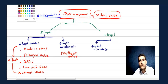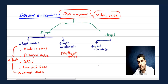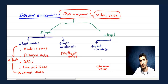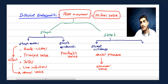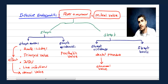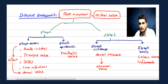The second Strep cause — it's a high-yield board question — is associated with chronic colonic cancer or inflammatory bowel disease. So colonic cancer associations, or any inflammatory bowel disease like Crohn's disease or ulcerative colitis — this is Streptococcus bovis (S. gallolyticus). This is very high yield and very easy.